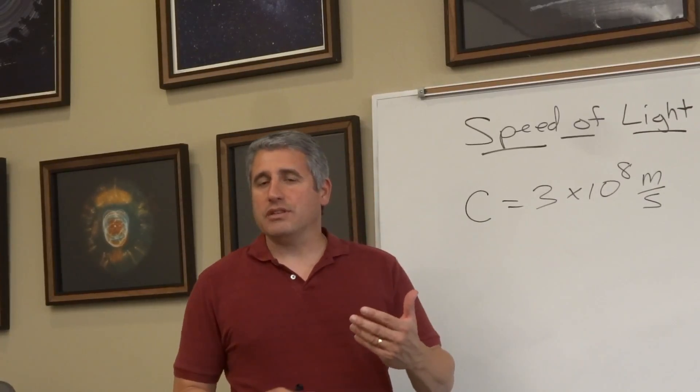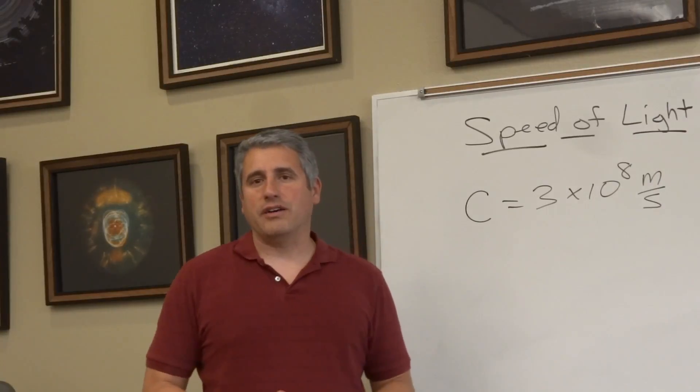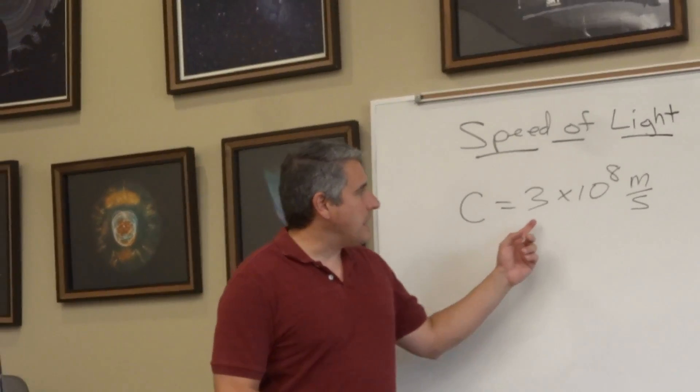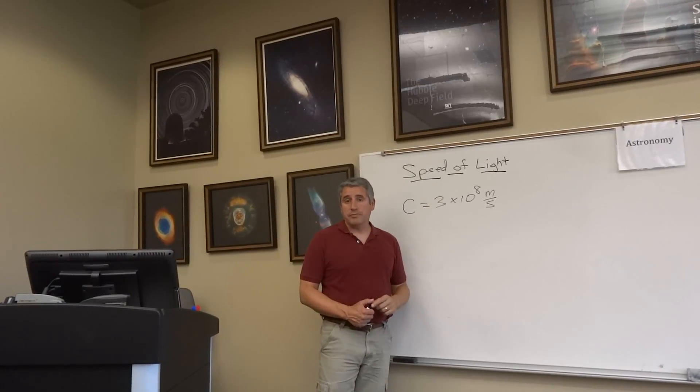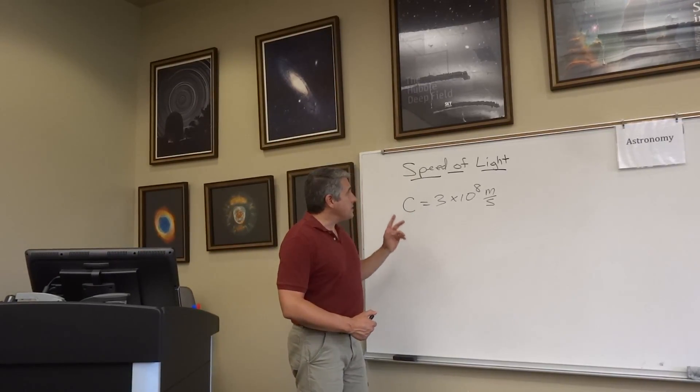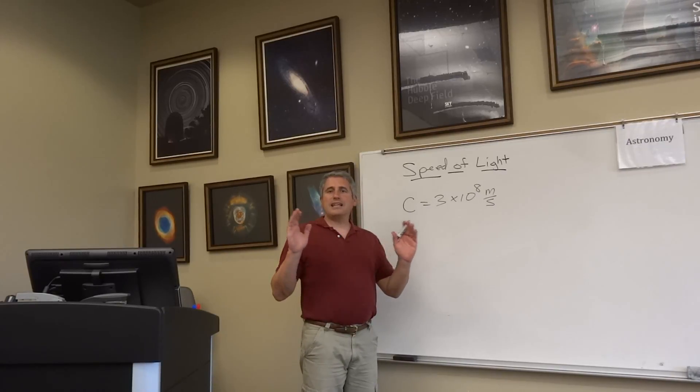So as we discuss light years, the distance light travels in a year, we recognize that this times the length of a year in seconds will give us that number. And we also recognize that there are some implications to having a speed of light. It means that things can't get there faster under any circumstances.